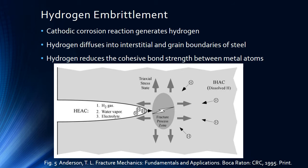Hydrogen embrittlement, while still under the category of environmentally assisted cracking, differs from stress corrosion cracking where a cathodic corrosion reaction drives the crack propagation. Hydrogen diffuses into the interstitial and grain boundaries of steel preceding the crack tip. This hydrogen reduces the cohesive bond strength between the metal atoms and allows the crack to propagate through a weaker material.